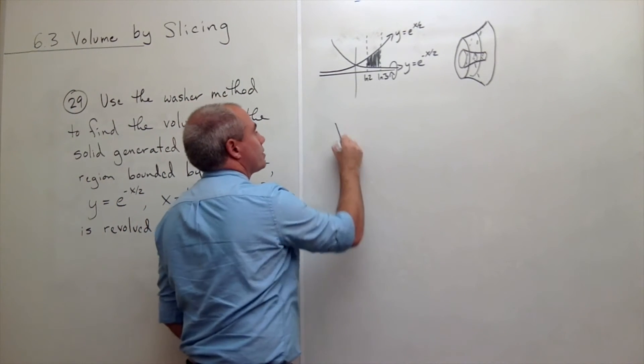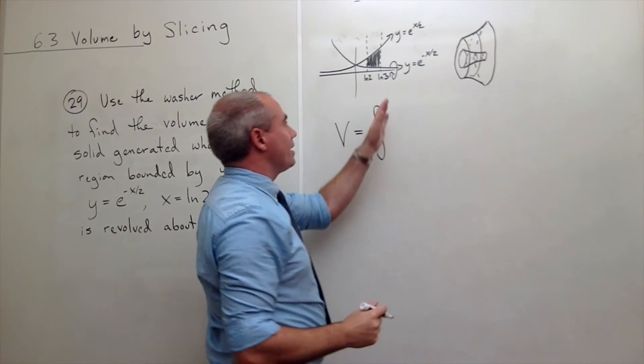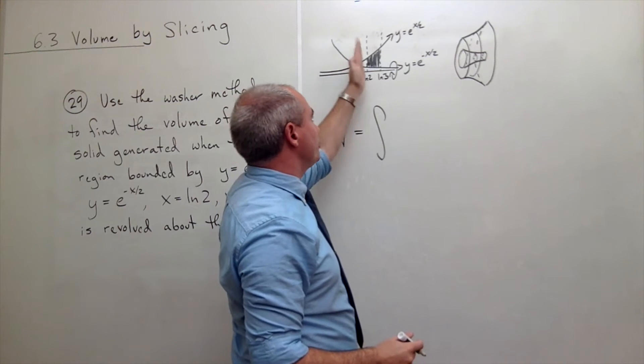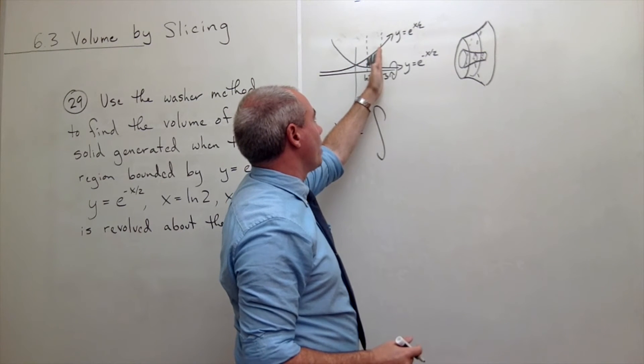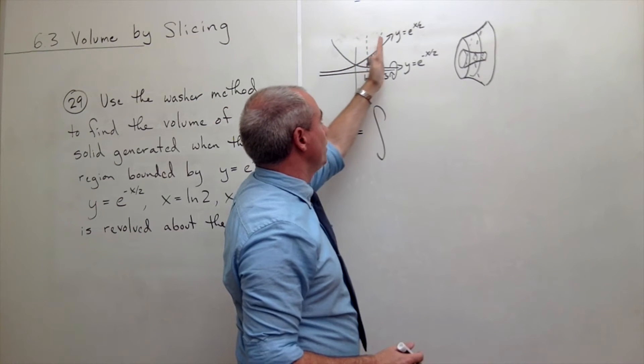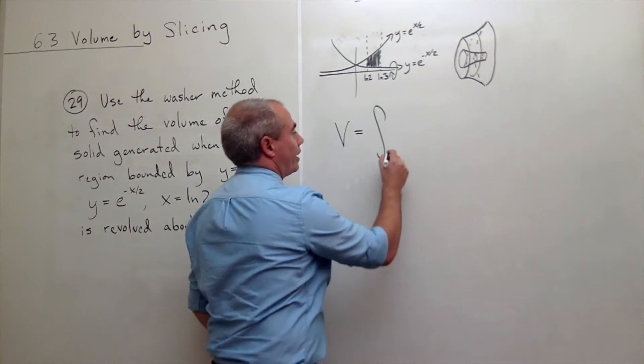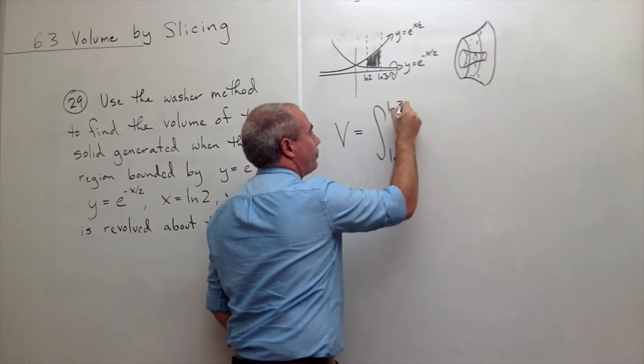And how the washer method works is to find the volume I'm going to integrate from A to B where A is where I start chopping up washers and B is where I stop chopping washers. So I start chopping my washers at ln of 2. I stop chopping washers at ln of 3. So I want to integrate this from ln of 2 to ln of 3.